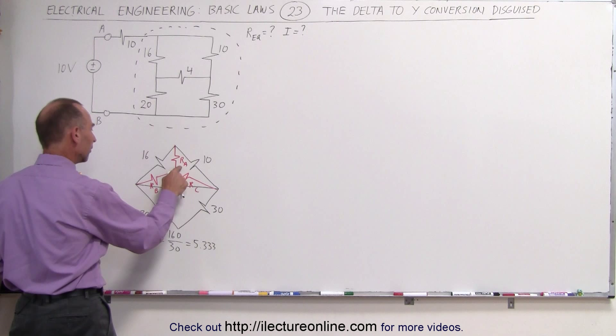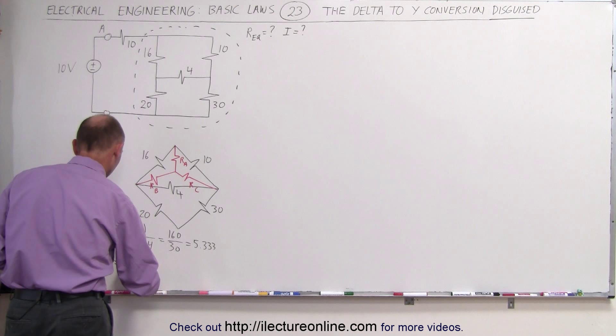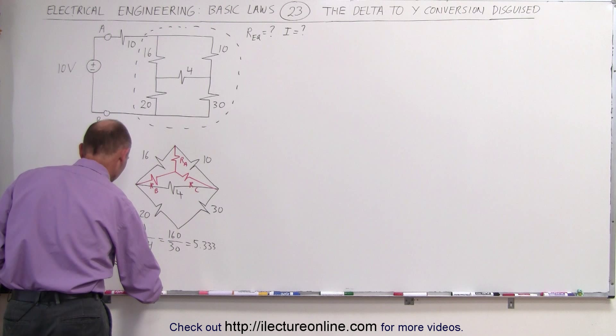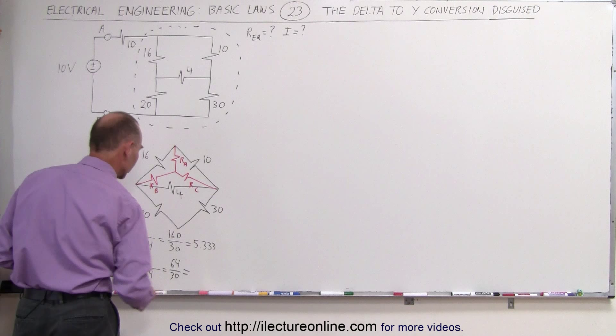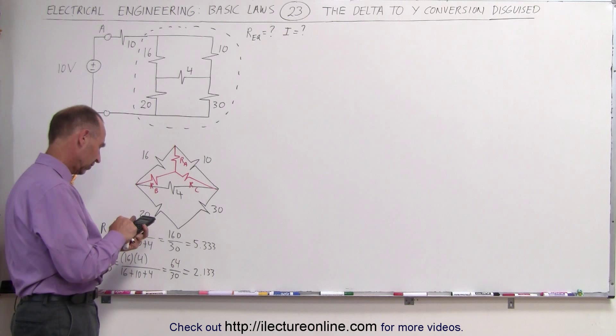R sub B, notice that R sub B is between the 16 and the 4-ohm resistor. So this is 16 times 4 divided by 16 plus 10 plus 4. 64 divided by 30, which is equal to 2.1333, and so forth. I think that's right. Let me quickly check. 64 divided by 30, sure enough, 2.133.